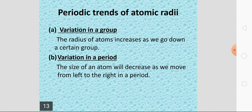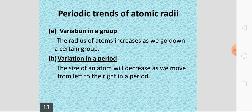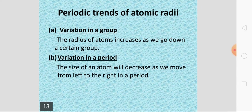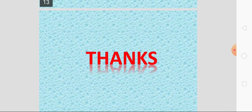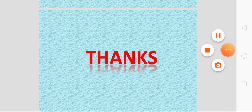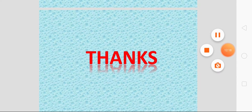Now we will study the periodic trends of atomic radius. Variation in a group: as we go down a group, the atomic radius increases. As we go across a period, the atomic radius decreases. I hope children you will understand this lecture. In the next part we will discuss more periodic properties.